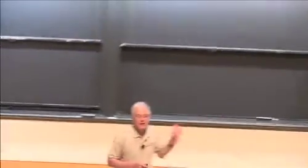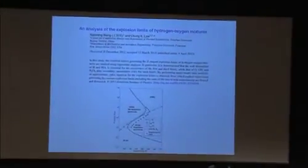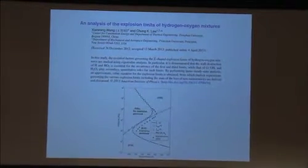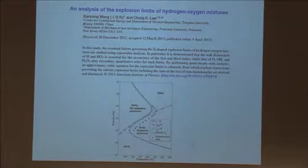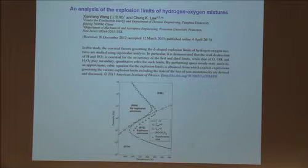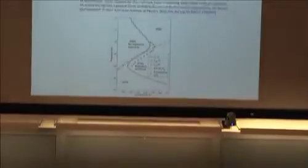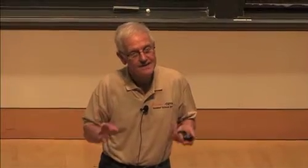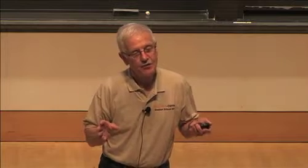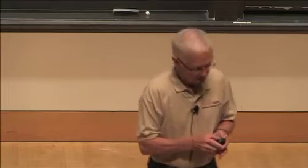Let me show you this reference, which was sent to me at about 11 p.m. last night by Professor Law. This is a paper which has just come out in the Journal of Chemical Physics, and it's an analysis of the explosion limits in the hydrogen-oxygen system, exactly what we were talking about yesterday. Instead of just taking a detailed chemical mechanism and integrating it numerically, it applies analytic approaches. It uses the steady state approximation and also ways of analyzing reactions using eigenvalues for the system. I would strongly recommend that you have a look at this paper.